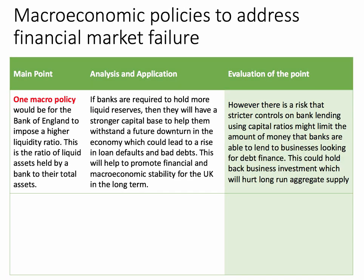In this type of essay you also need macro points. One macro policy would be for the Bank of England to impose a higher liquidity ratio, defined as the ratio of liquid assets held by a bank to their total assets. If banks are required to hold more liquid reserves, they'll have a stronger base of capital to withstand a future downturn or possible recession, which could lead to a rise in loan defaults and bad debts. A better capital base provides a buffer stock for banks and helps promote financial and macroeconomic stability for the UK in the long term.